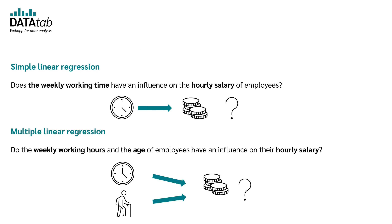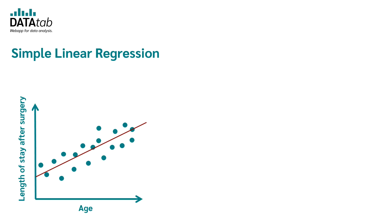To summarize: the simple linear regression is used for a question like, does the weekly working time have an influence on the hourly salary of employees? There is only one independent variable used, which is the weekly working time. The multiple linear regression could be used for the question, do the weekly working hours and the age of employees have an influence on their hourly salary? In this case we have two independent variables: the weekly working hours and the age of employees.